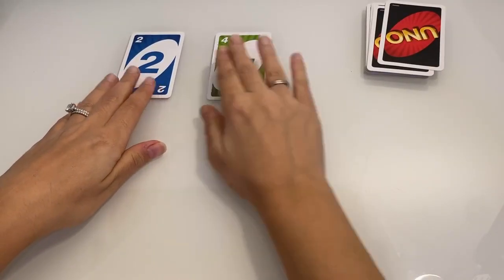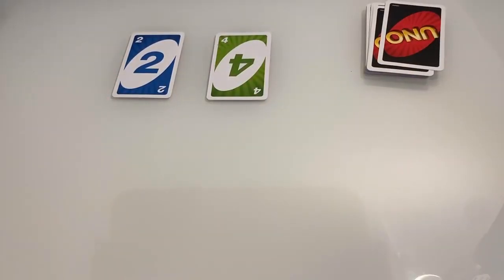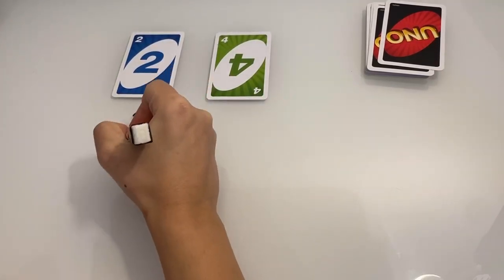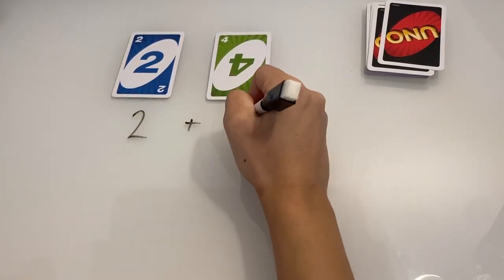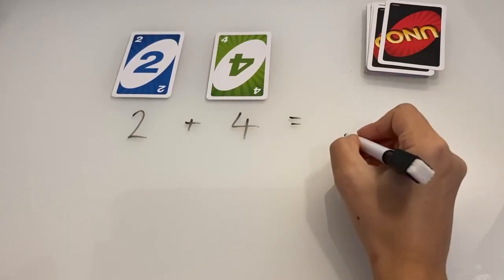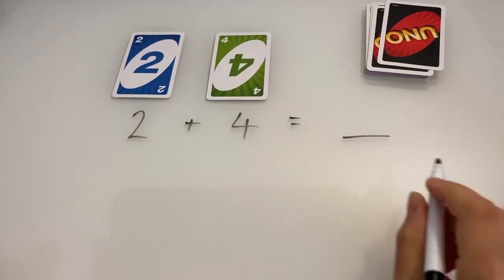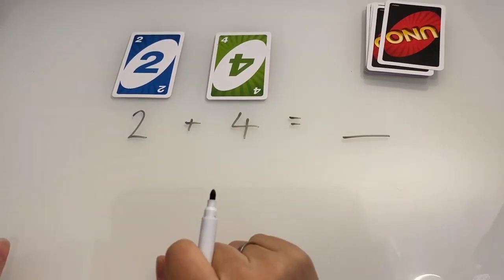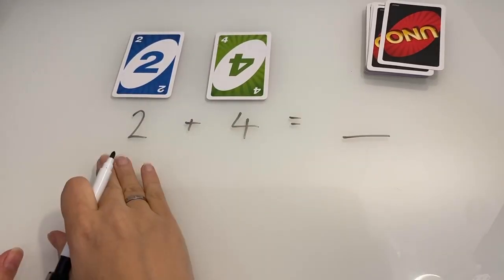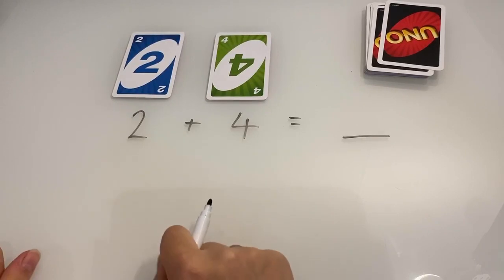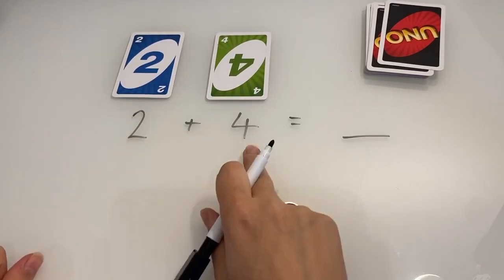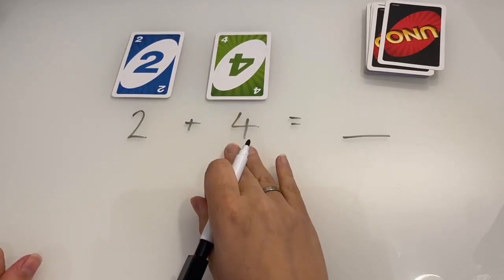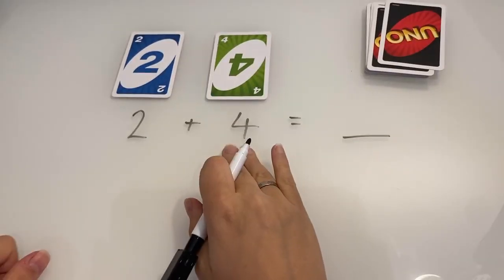So two plus four equals something. What I like to do is the lock-in method, so you lock the biggest number in your head. So out of two or four, which one is the biggest number? That's right, four. So four is now locked in our head.